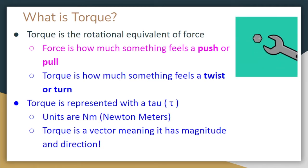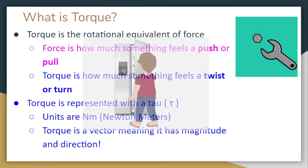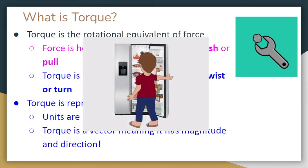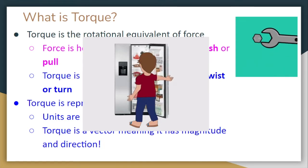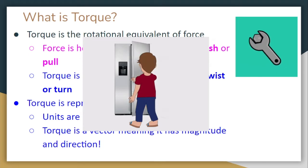Over here, we just have a picture showing us what torque is, so a wrench screwing in a nut. And then over here, we have a person opening a fridge for possibly a late night snack. That person is applying force to that fridge door, which is swinging the door open.